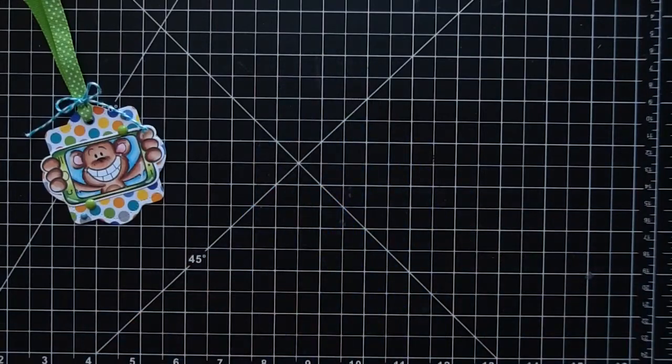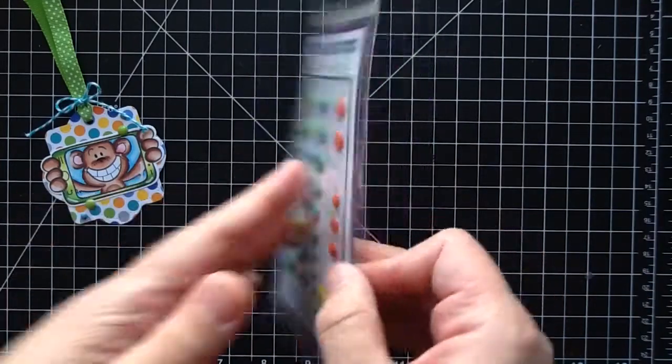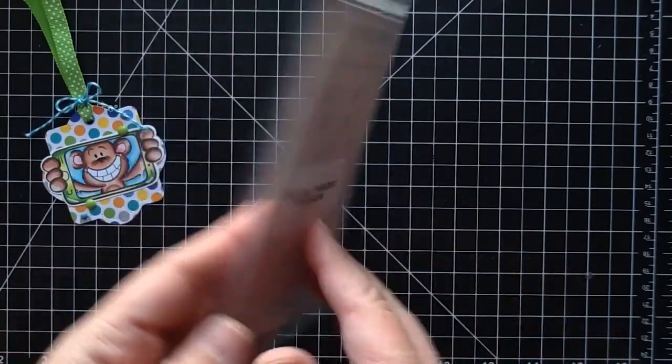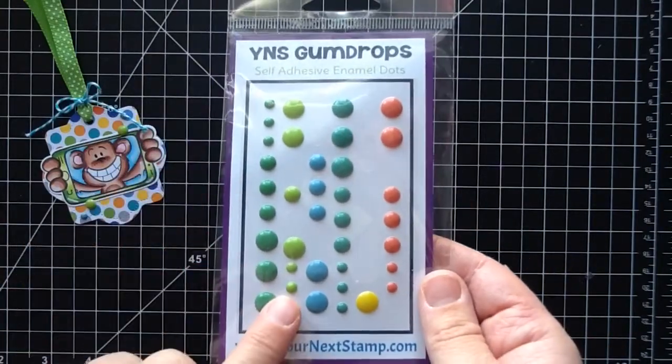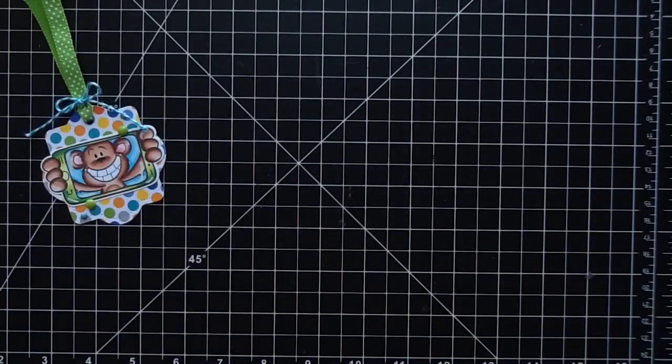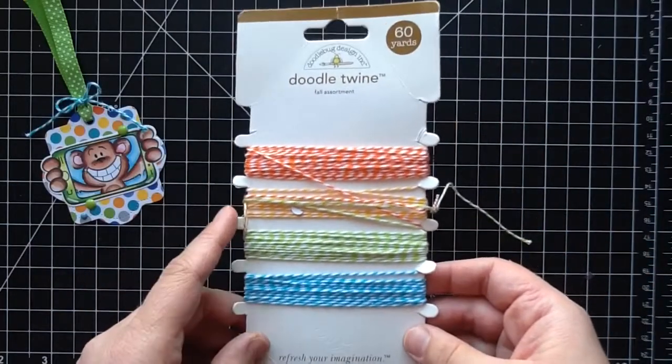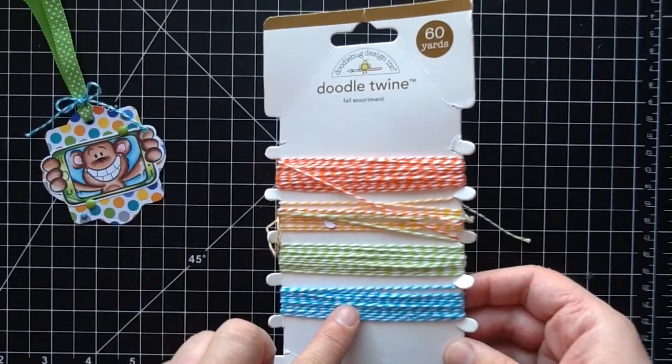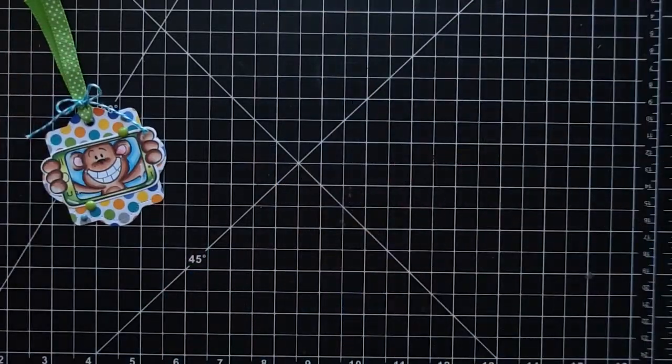I also used the Your Next Stamp Wire Snips, and I used these gumdrops, the Tropical Paradise gumdrops. I will have all this linked in the description box below. Next, I used this Doodlebug Fall Assortment Twine. I used the blue twine there, and I just used some green polka dot ribbon that I had in my stash.